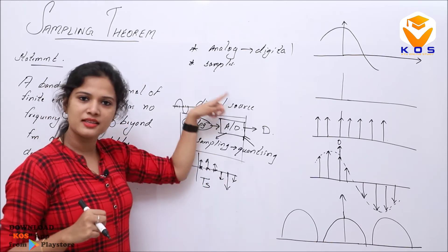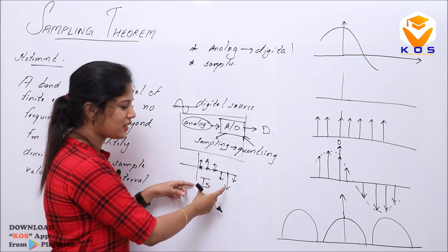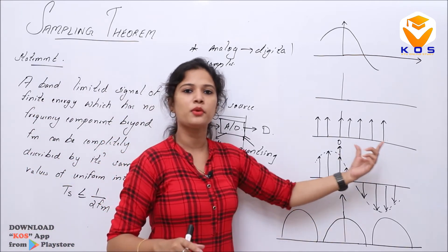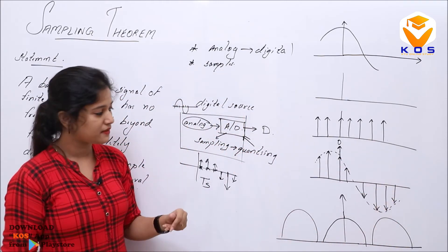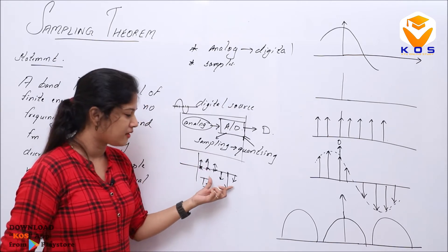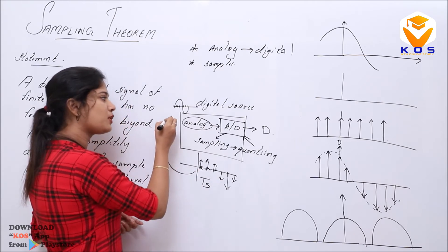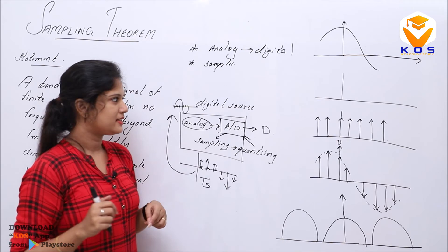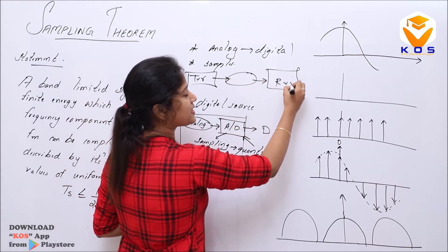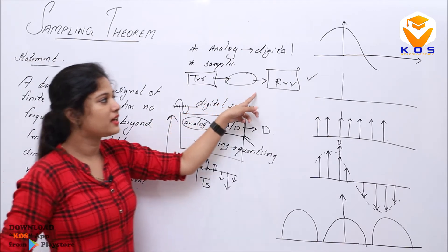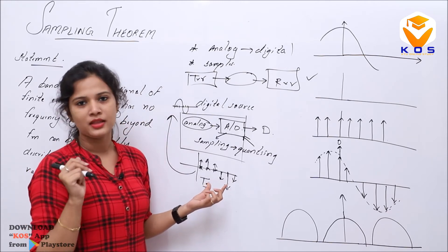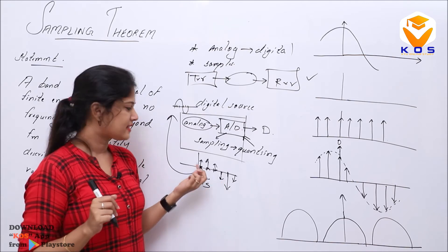We need to convert samples. This is the transmitter side. The signal goes to the source encoder, then channel encoder, then modulation. On the receiver side, we give it to the channel and the receiver outputs the actual message. So we have samples, and if we have to reconstruct the samples, these samples should be approximate enough.